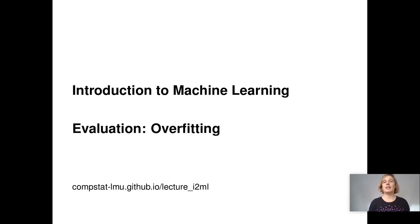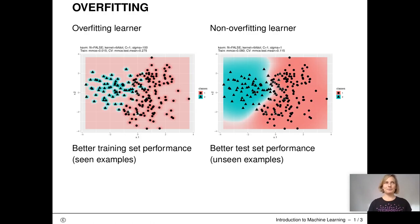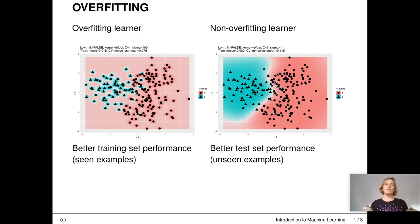Welcome to our next unit on performance evaluation in machine learning. This unit is about a common issue in machine learning which we want to try to avoid. This issue is called overfitting. Overfitting means that our model does not learn the underlying data generating process but instead learns how to optimally fit to the training data. This results in a bad generalization error.